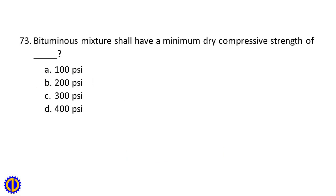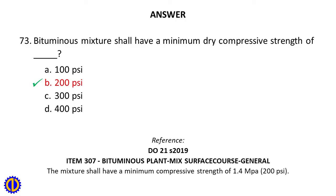Question 73. Bituminous mixture shall have a minimum dry compressive strength of blank. A. 100 psi, B. 200 psi, C. 300 psi, D. 400 psi. Answer: B. 200 psi. Reference: D021S 2019, Item 307, Bituminous Plant Mix Surface Course General. The mixture shall have a minimum compressive strength of 1.4 MPa (200 psi).